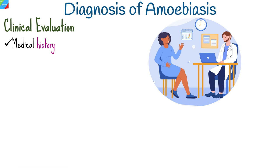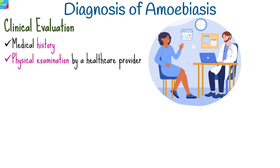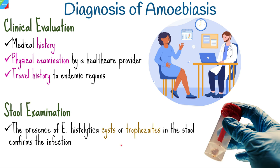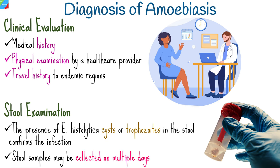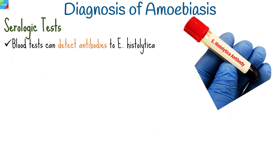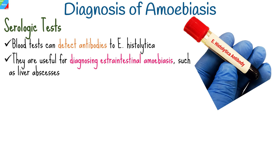The initial step in diagnosis involves a thorough medical history and physical examination, including inquiry about symptoms such as diarrhea, abdominal pain, and travel history to endemic regions. Microscopic examination of stool samples is the most common laboratory test, with the presence of Entamoeba histolytica cysts or trophozoites confirming infection. Stool samples may be collected on multiple days because cysts and trophozoites may not be consistently shed. Blood tests can detect antibodies to Entamoeba histolytica, and serologic tests are useful for diagnosing extraintestinal amoebiasis such as liver abscesses.